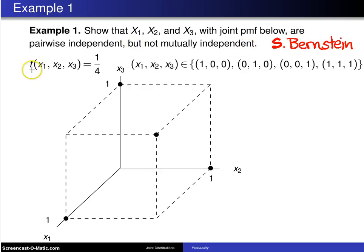So the joint probability mass function of X1, X2, and X3 is 1/4, and that is for (X1, X2, X3) an element of these four points: (1, 0, 0) given right here, (0, 1, 0) given right here, (0, 0, 1) given right here, and finally (1, 1, 1) given right here. So each one of these four points has a weight of 1/4.